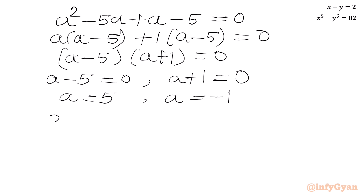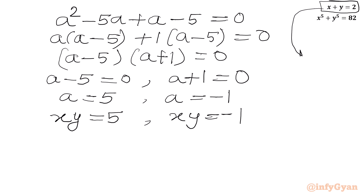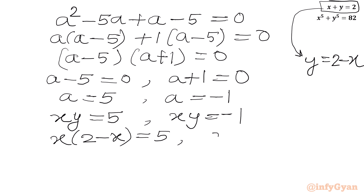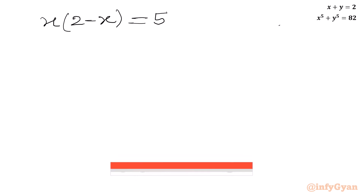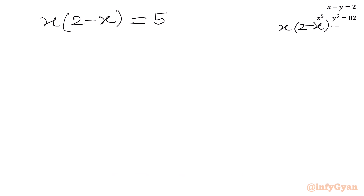Now A was our substitution for xy. So I can write xy equal to 5 and xy equal to negative 1. I will use equation 1: x plus y equals 2, so y equals 2 minus x. Substituting into xy equals 5, I write x times 2 minus x equal to 5.